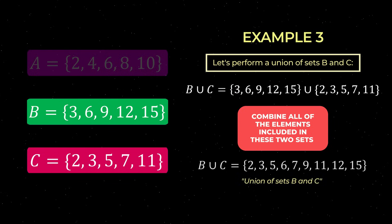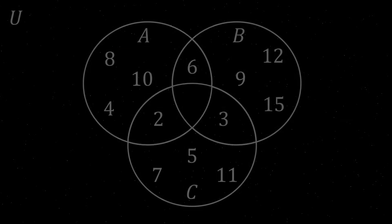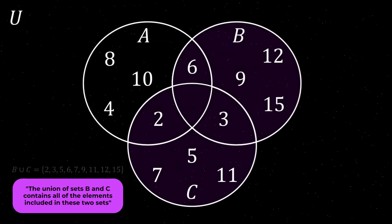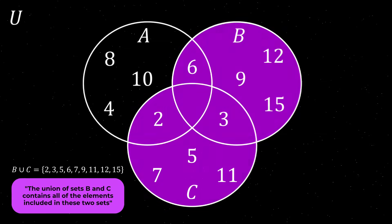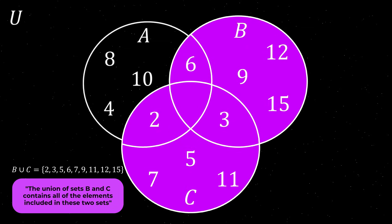Let's now illustrate this union of sets B and C on our Venn diagram. As you can see, the union of sets B and C is the area occupied by both of these sets.